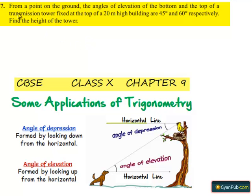Moving on to the seventh question. From a point on the ground, the angles of elevation of the bottom and top of a transmission tower fixed at the top of a 20 meter high building are 45 degrees and 60 degrees respectively. Find the height of the tower.